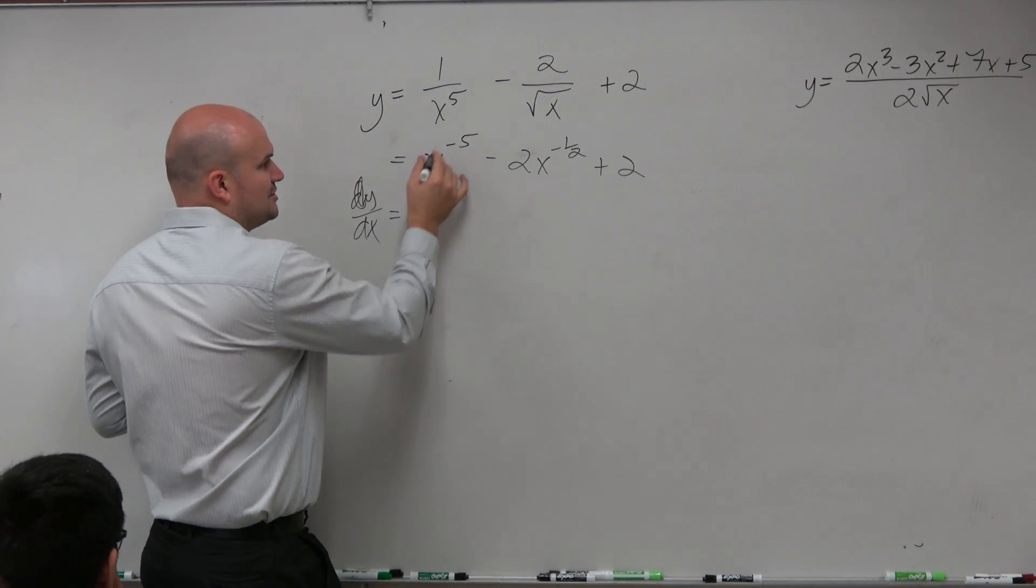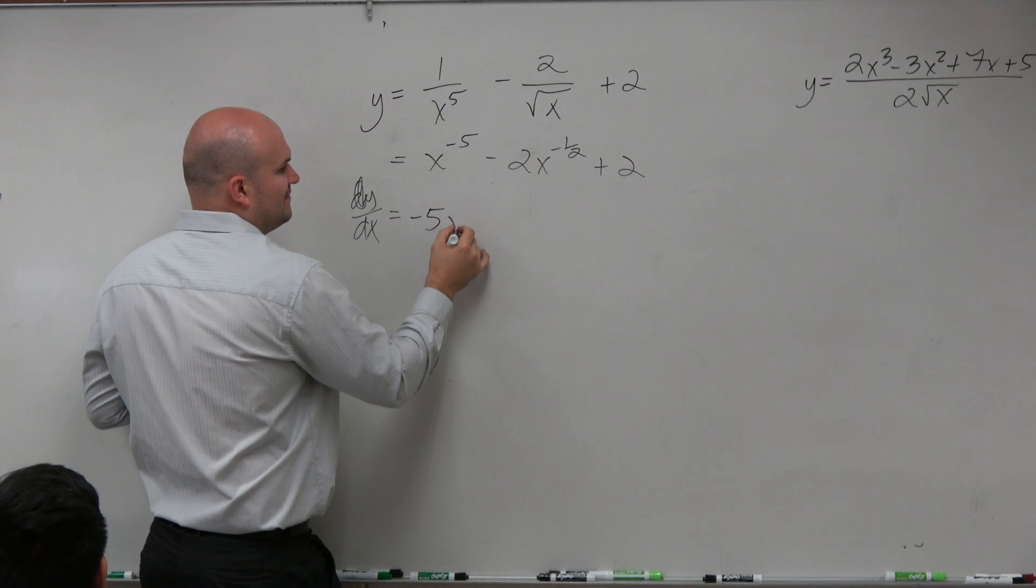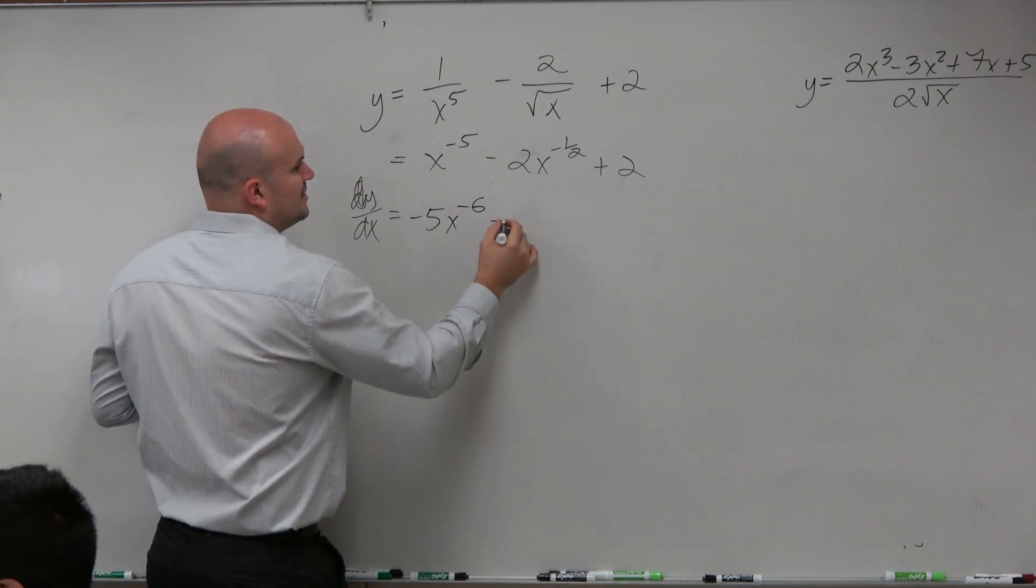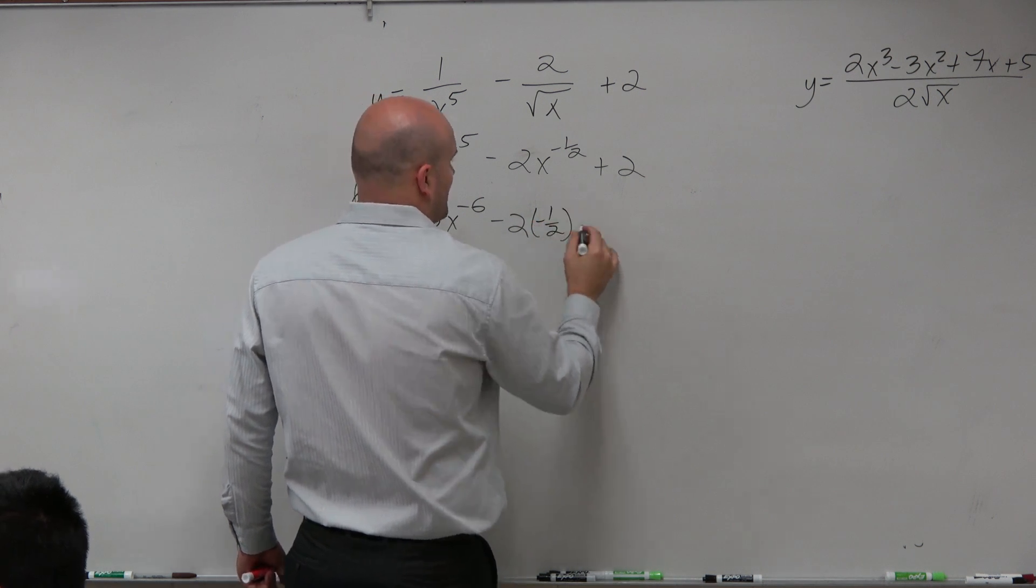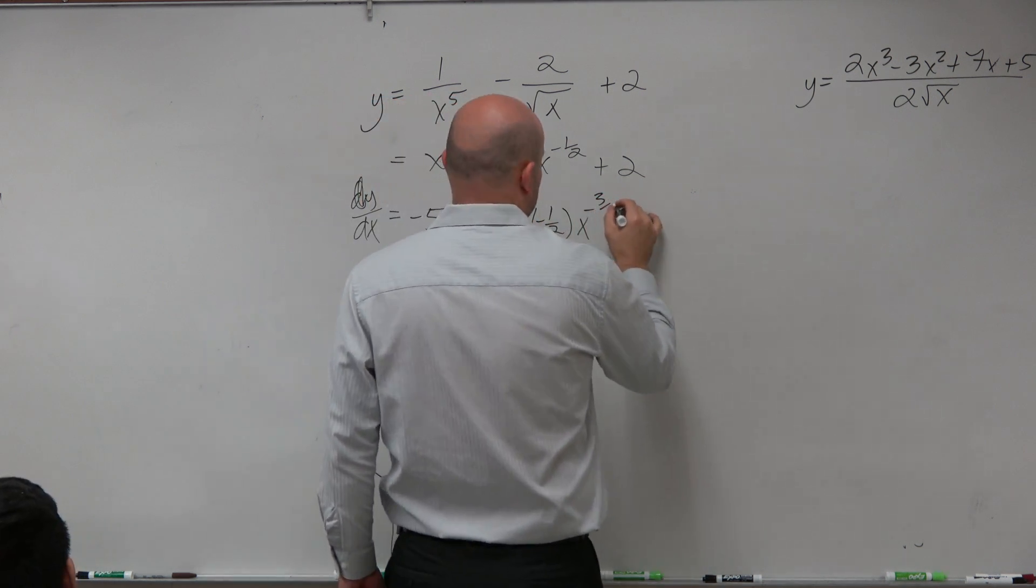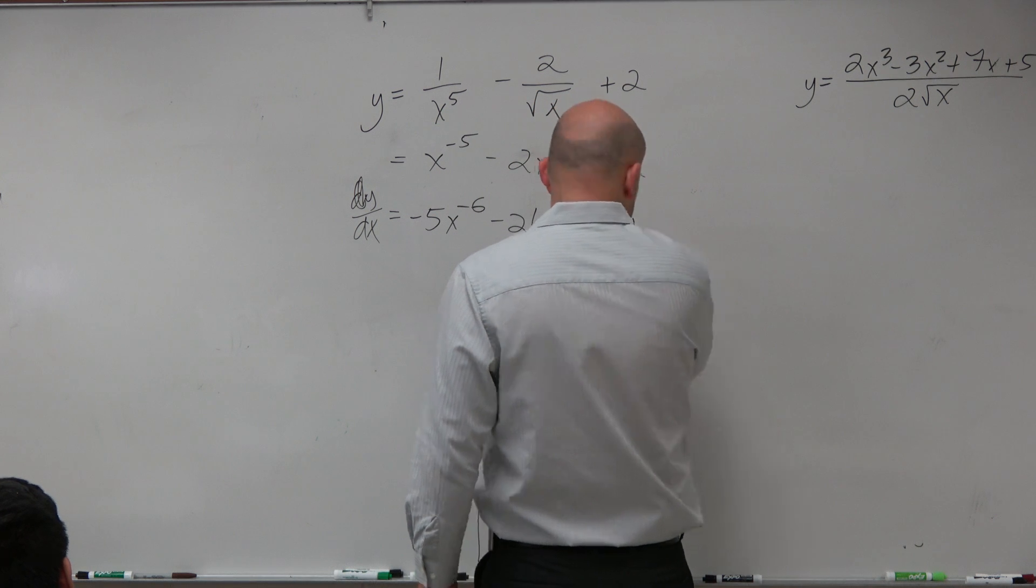So, let's just go ahead and find it here. We're going to do negative 5, X to the negative 6, minus 2, times negative 1 half, times X to the negative 3 halves, plus 0.